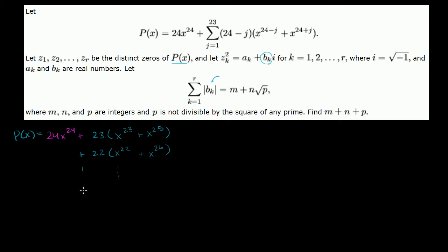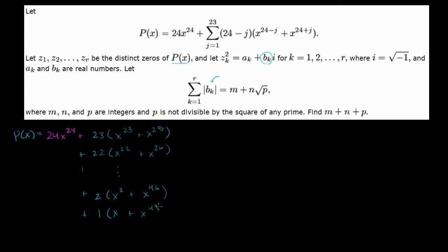We keep adding all the way. Let's go to j equal 22: 24 minus 22 is 2, so it's 2x squared plus x to the 46th. And then the last term, when j equals 23, we get 1 times (x plus x to the 47th). So that's our polynomial.